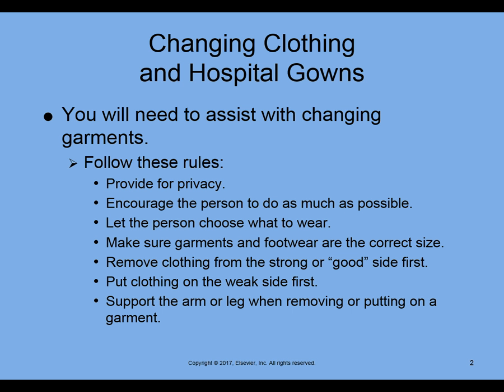An important point is that you want to support the arm and the leg when removing or putting on a garment. There are two parts to the extremity — the arm and the forearm, and the leg and the lower leg — and both of those need to be supported when you are lifting an extremity. That is something the examiners will look for. You don't want to lift an arm by just taking the hand and lifting; support the whole arm. We don't want anybody to lose points during the examination because of that.